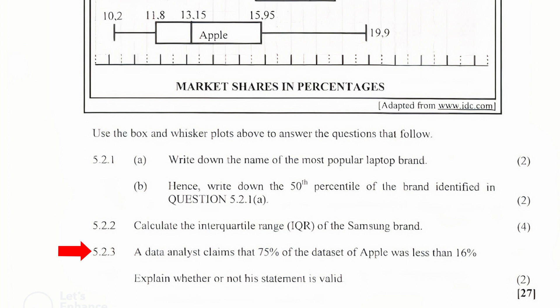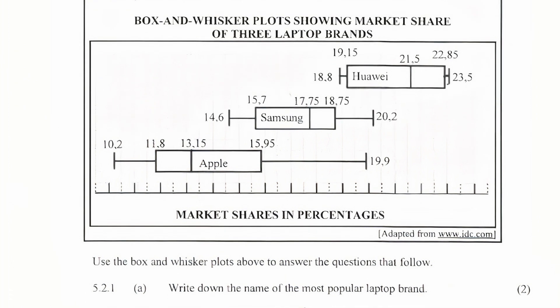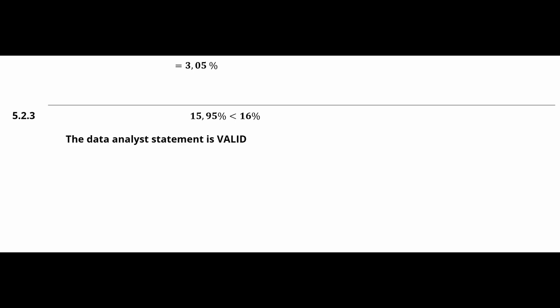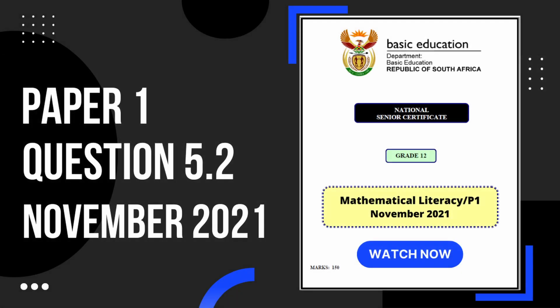Question 5.2.3: A data analyst claims that 75% of the data set of Apple was less than 16%. We should know that 75% corresponds with the 75th percentile. From the box and whisker plot of Apple, the 75th percentile is 15.95%, which is less than 16% as claimed by the data analyst. So the data analyst's statement is valid. That's it for question 5.2 — if you found this video helpful, you can check out the next video.